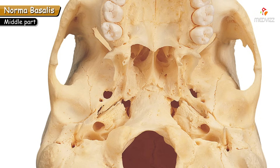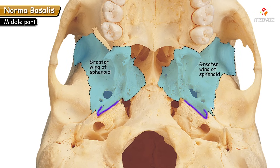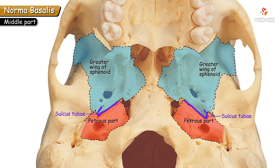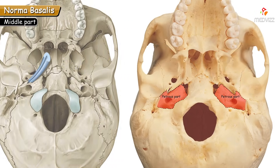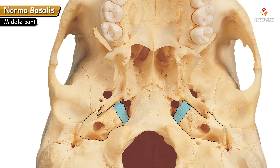The junction between the greater wing of the sphenoid and the petrous part of the temporal bone is marked by a sulcus called the sulcus tubae, which in the living person lodges the cartilaginous part of the Eustachian tube. The medial end of the petrous part of the temporal bone is pointed, forming the apex of the petrous part.